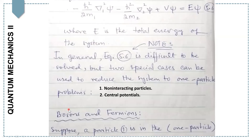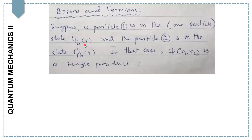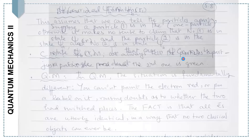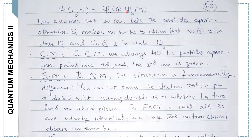Let's start our discussion with bosons and fermions first. Both are different families of particles — some particles belong to bosons, some belong to fermions. Suppose particle 1 is in state ψ_A and particle 2 is in state ψ_B. Keeping both in a single state, that would be ψ(r₁, r₂) = ψ_A(r₁) ψ_B(r₂). This equation assumes that we can tell particles apart — otherwise it makes no sense to claim that particle 1 is in state A and particle 2 is in state B.